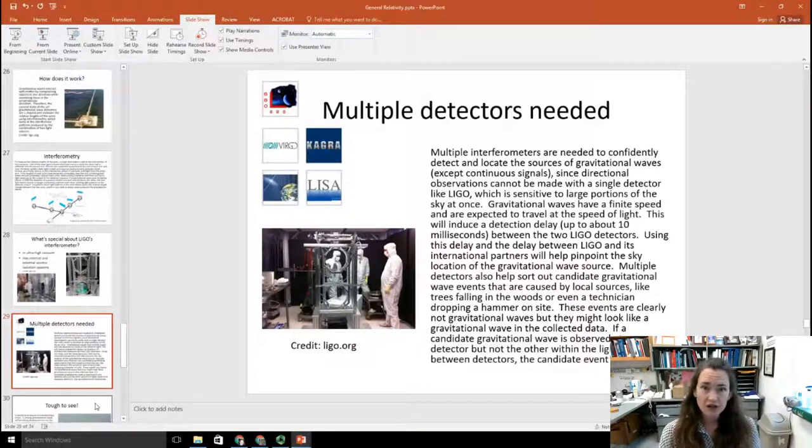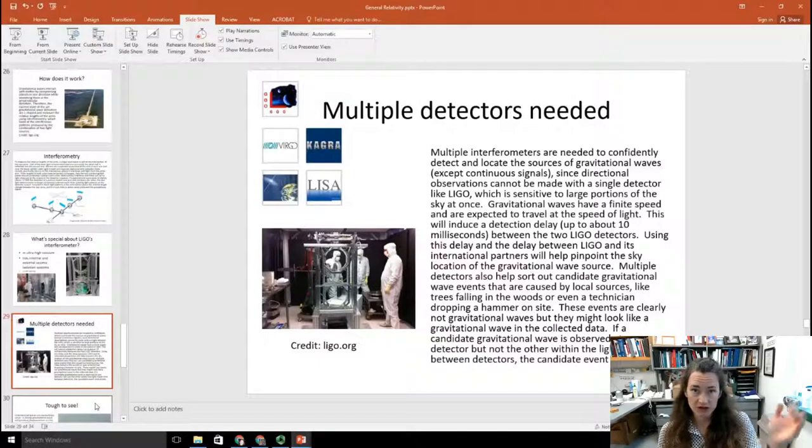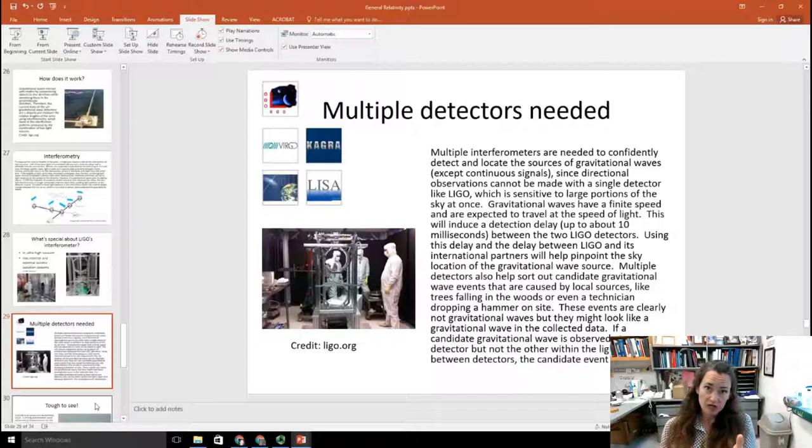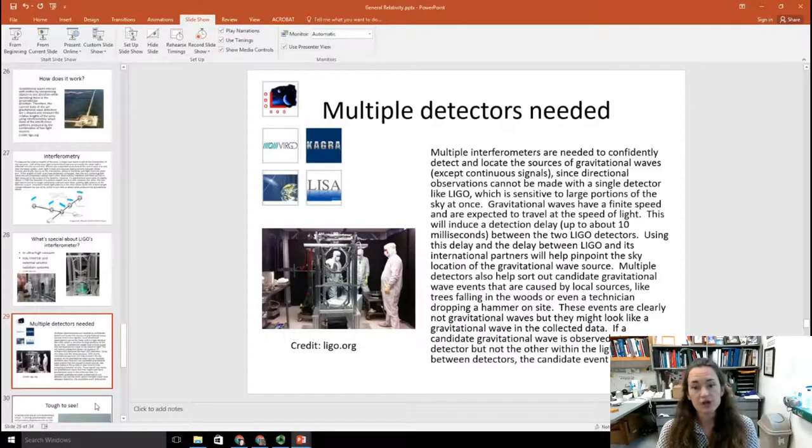It also works with other facilities in other countries around the world. You need these multiple interferometers in order to confidently detect and locate sources of gravitational waves. And so what happens is there's going to be a time delay between when it reaches one facility versus another facility on the other side of the world, as the gravitational wave passes through Earth. For example, we might have one signal that hits at a certain time here in Louisiana and at another time in a facility in Australia. So this helps sort out candidate gravitational wave events that are caused by maybe local sources, like the hammer dropping that I talked about earlier.